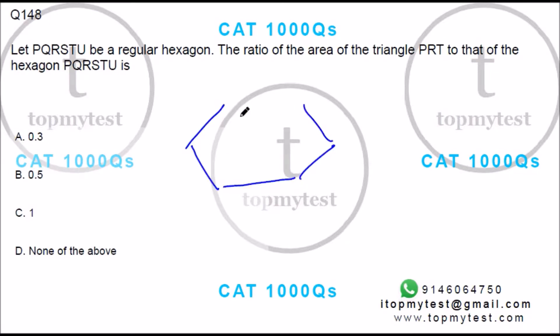So you have a regular hexagon PQRSTU, PRT should be how much? Let me complete the equal triangles.